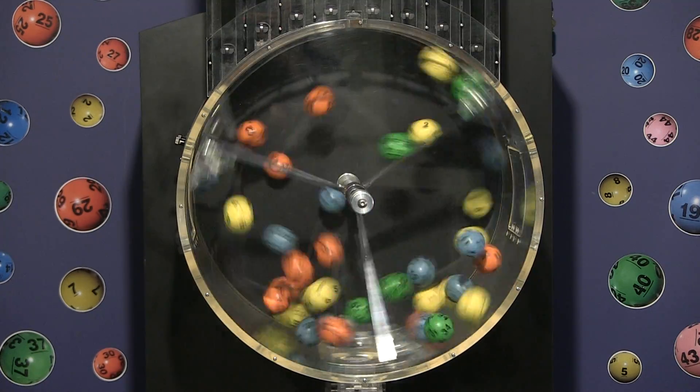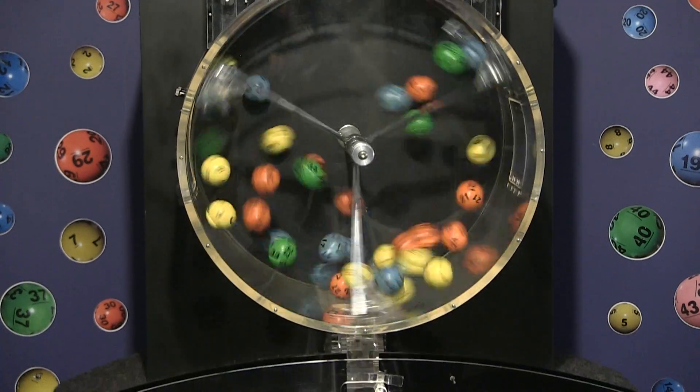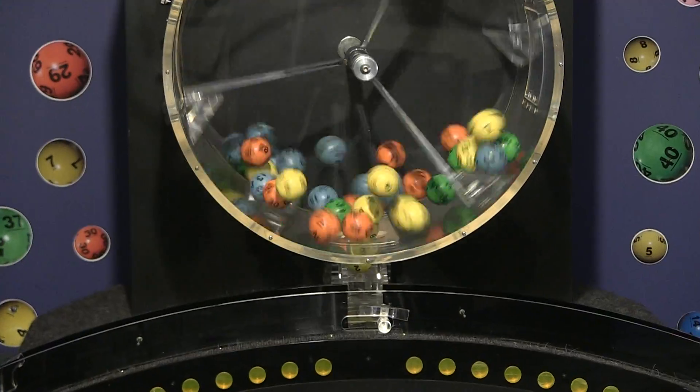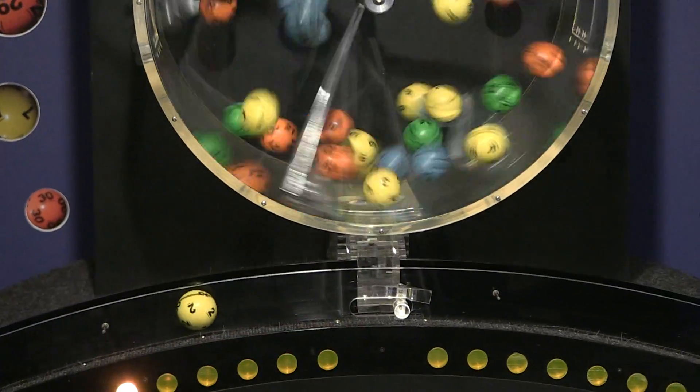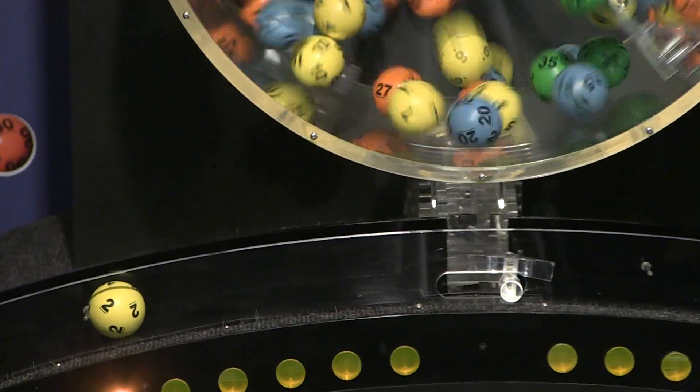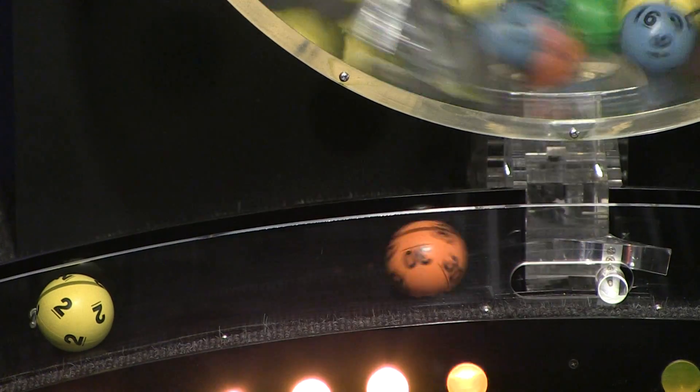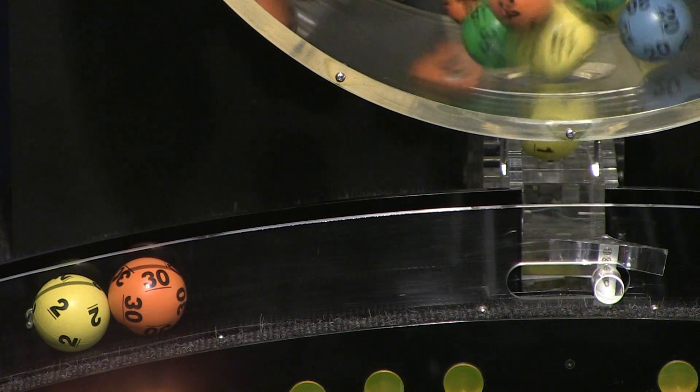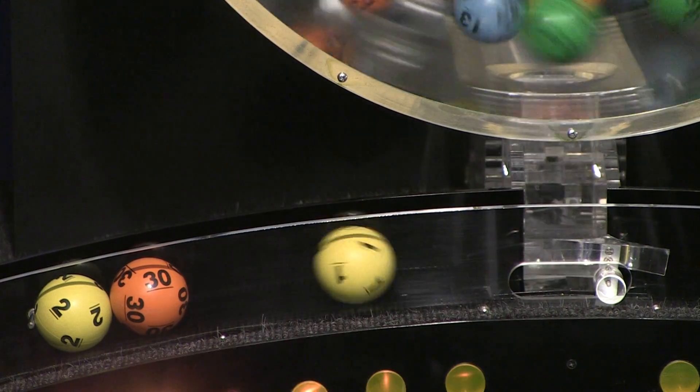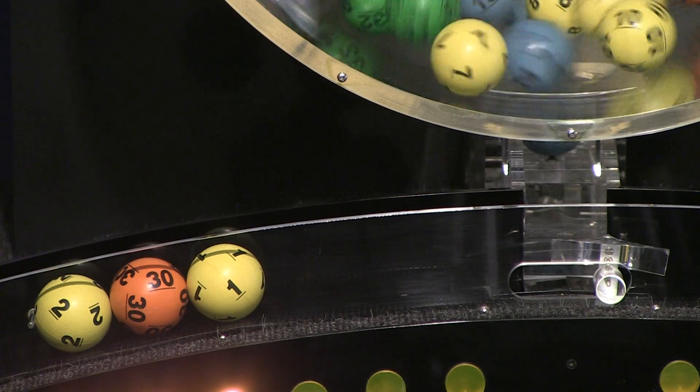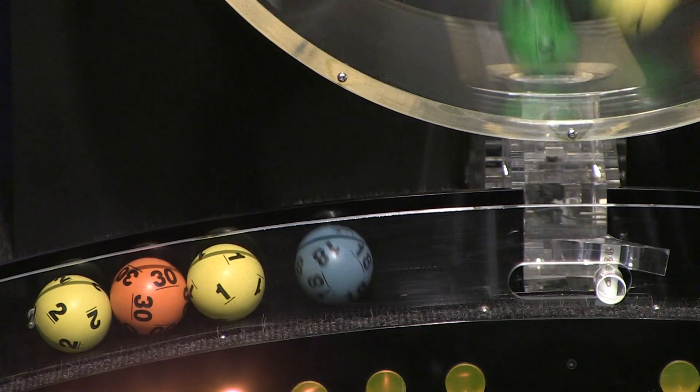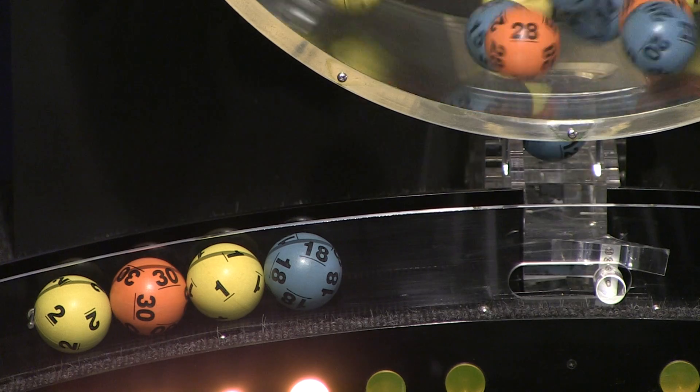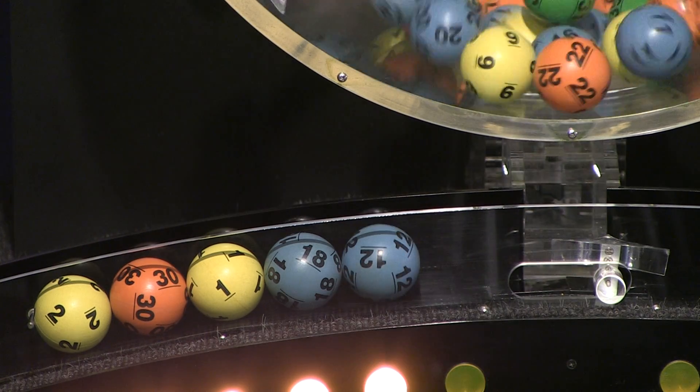Now let's see how you did. Tonight's Mass Cash drawing, our first number up is number two. Following that we have number 30. And here comes number one. Up next is 18 and the final ball in the sequence is number 12.